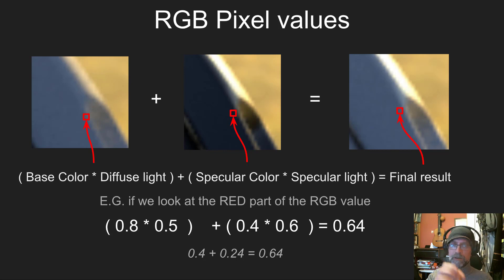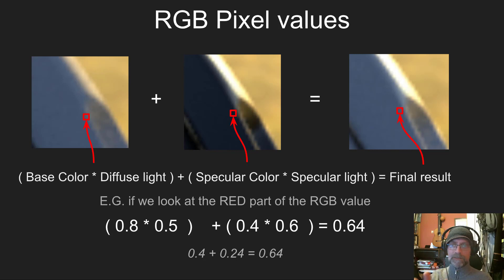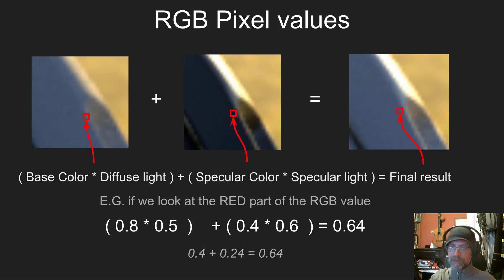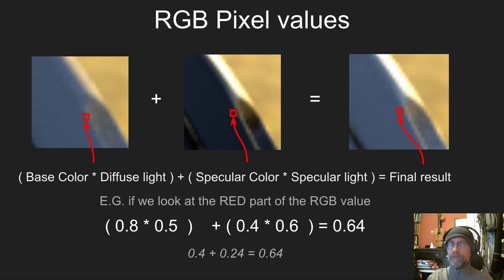We have base color — our texture — times diffuse light, plus specular color times specular light. Specular color is just the specular texture. That equals the final result, and it's just simple math. If we look at the red part of an RGB value: 0.8 times 0.5 plus 0.4 times 0.6 equals 0.64. Because 0.8 × 0.5 = 0.4, and 0.4 × 0.6 = 0.24, and 0.4 plus 0.24 equals 0.64. We don't need to do the math ourselves — computers do it for us — but we need to understand it's just simple addition and multiplication driving the whole thing.